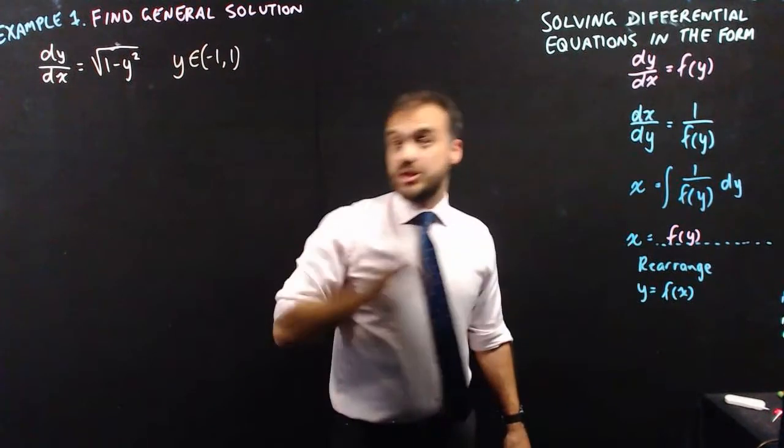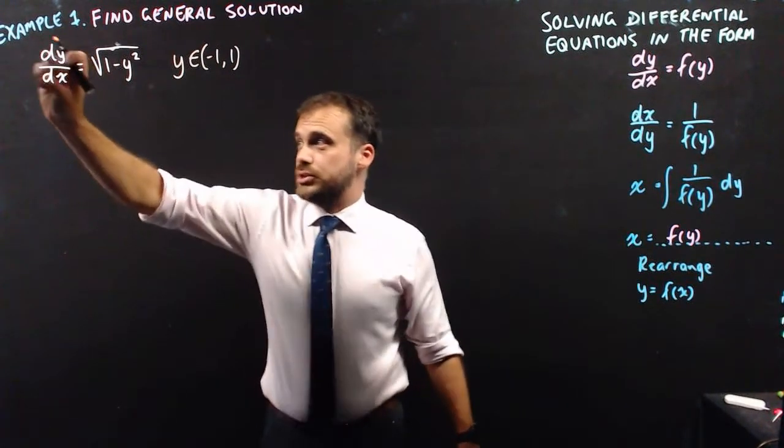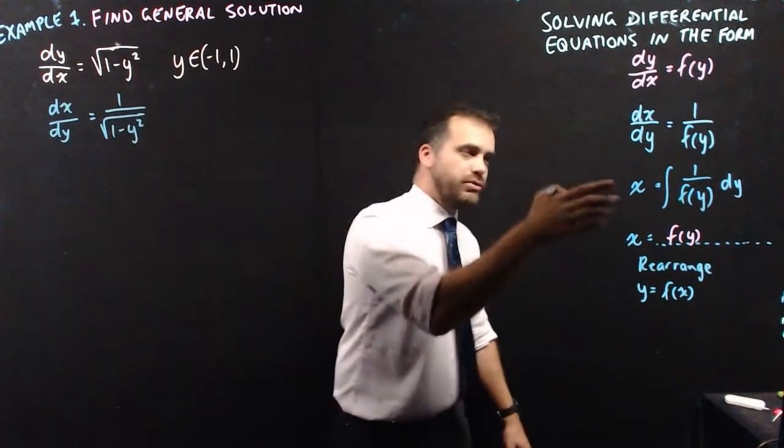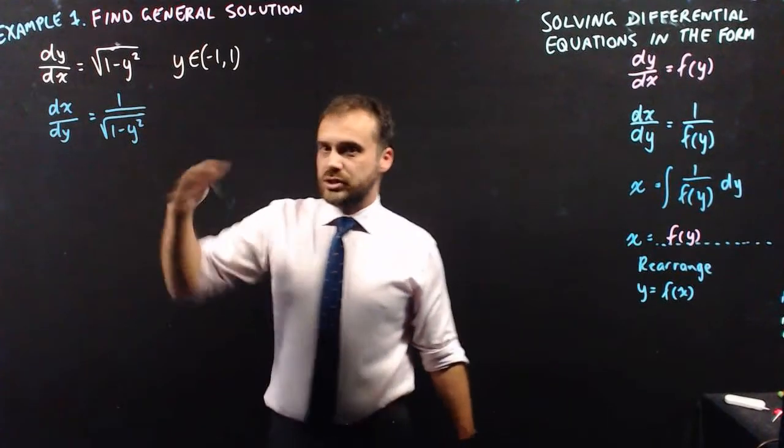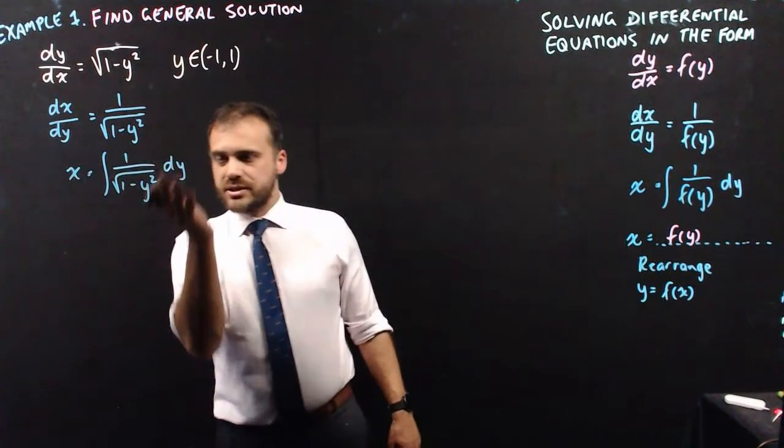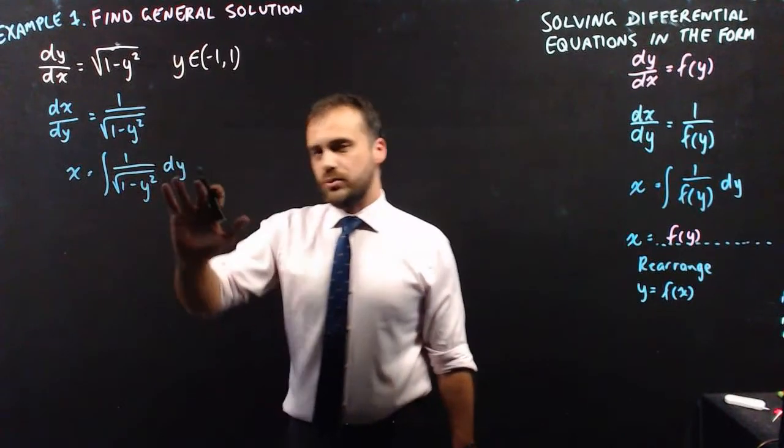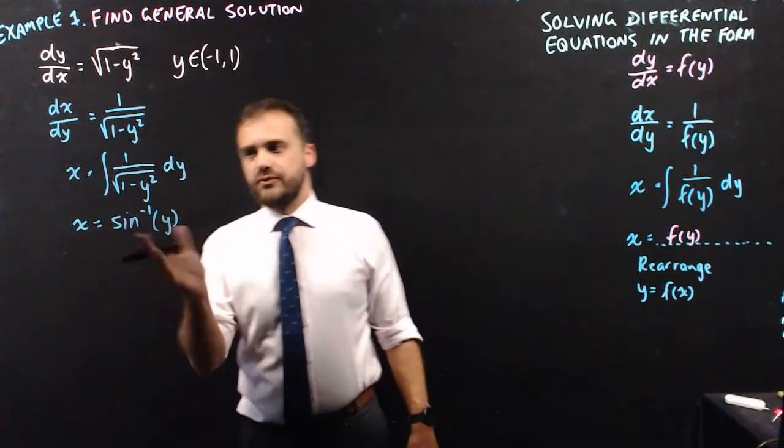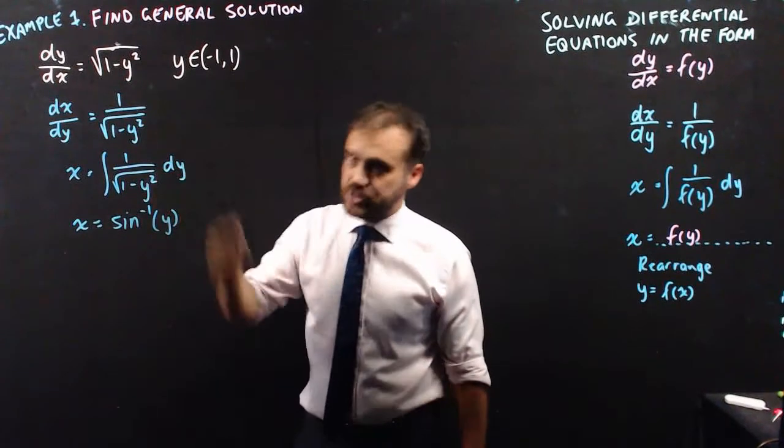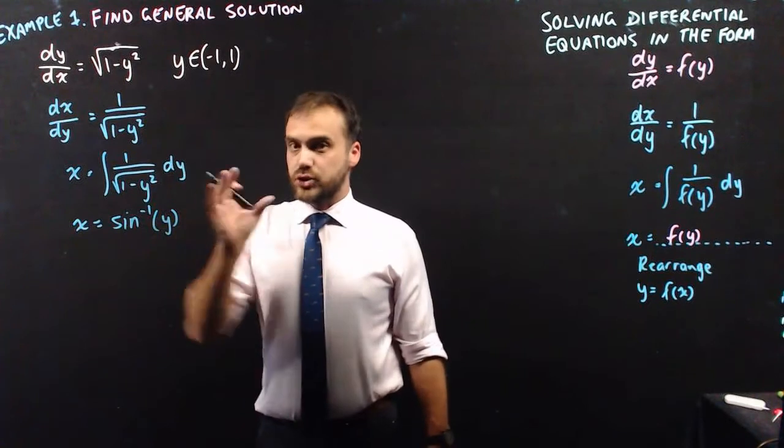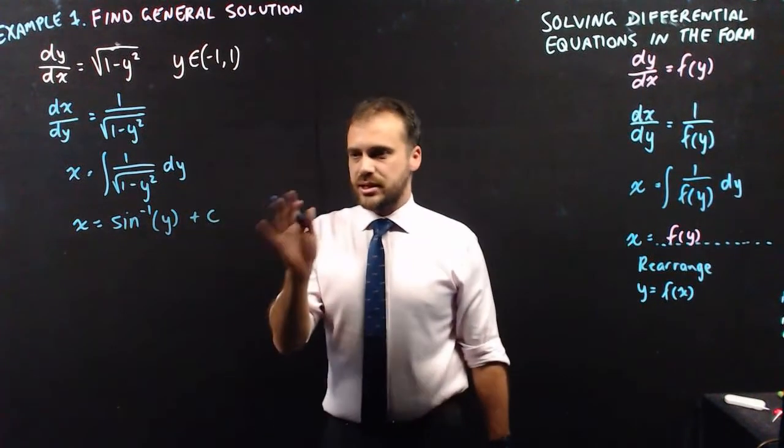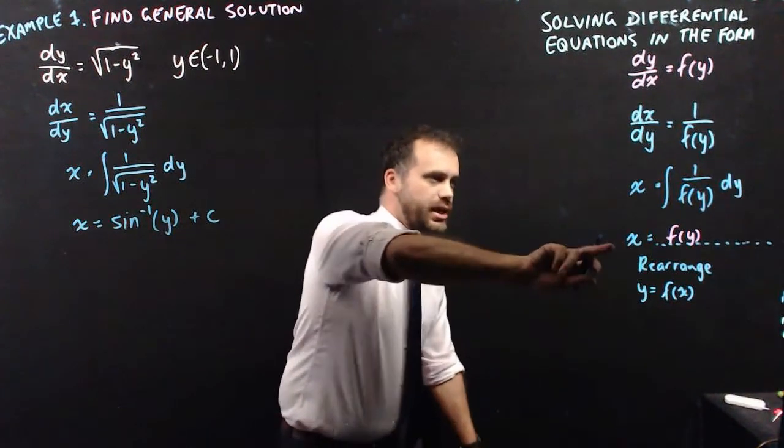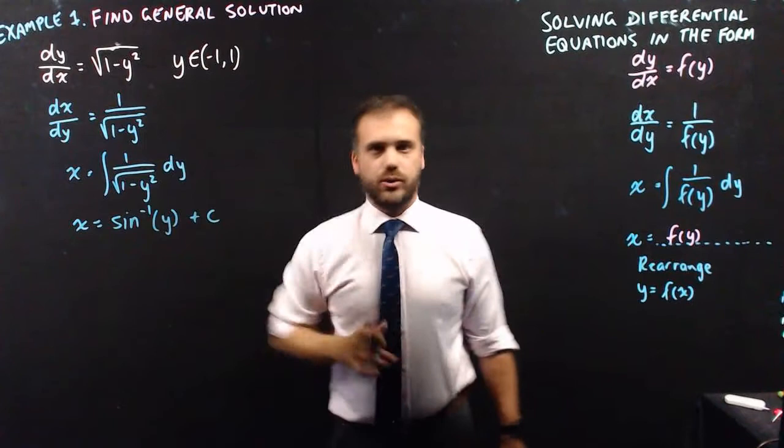Our first step was to take the reciprocal of both sides. So dy/dx becomes dx/dy, and this becomes 1 over that. After that, we're integrating that function so we can find out what x is. Just be careful here. It is a function of y, so you're integrating it with respect to y. Now this is an integral we know. It's just arc sine or inverse sine y, not x, because this is a function of y. Don't forget, there is a plus c sitting on the end here.